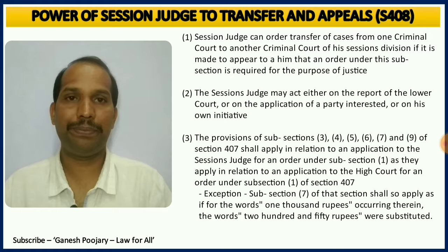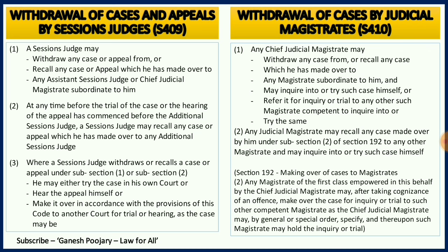Section 409 deals with withdrawal of cases and appeals by the session judge. A session judge can withdraw any case or appeal, or recall any case or appeal from an assistant session judge or chief judicial magistrate, at any time before the trial or hearing of the appeal is commenced. He can then either try the case in his own court or hear the appeal himself.